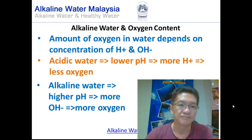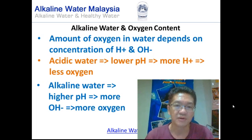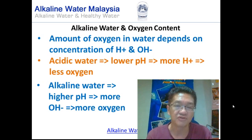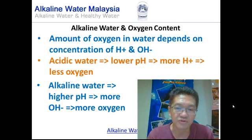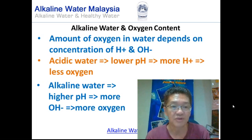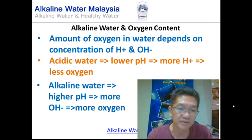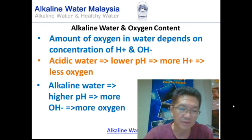The next thing we need to talk about is alkaline water and its oxygen content. The amount of oxygen in water depends on the concentrations of hydrogen and hydroxyl ions. For acidic water, which has a pH less than 7, there are more hydrogen ions, and that translates to less oxygen. Whereas for alkaline water, the pH is higher, there are more hydroxyl ions, and that means there is more oxygen in the alkaline water.